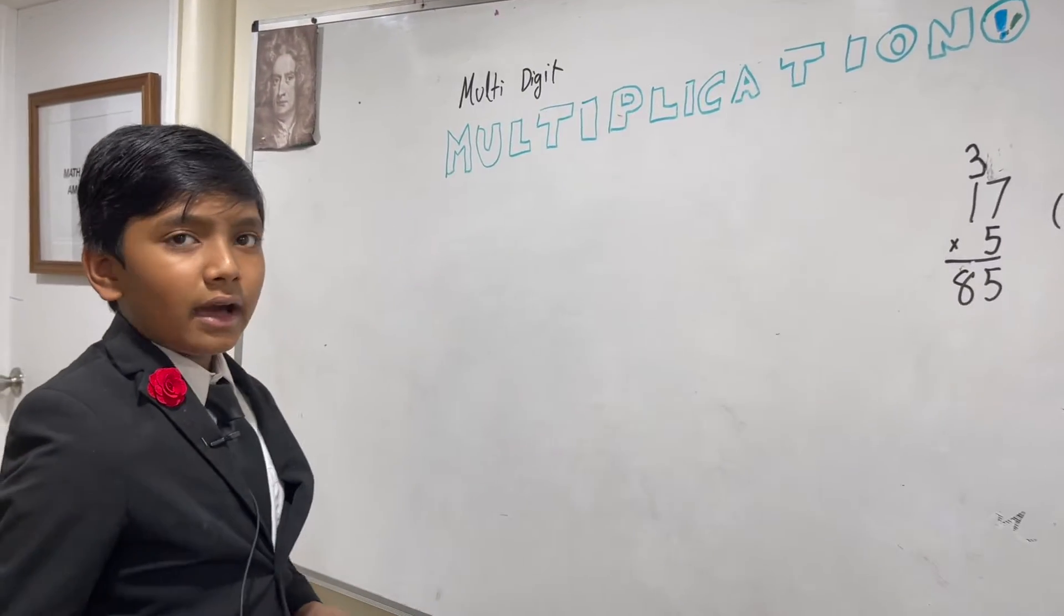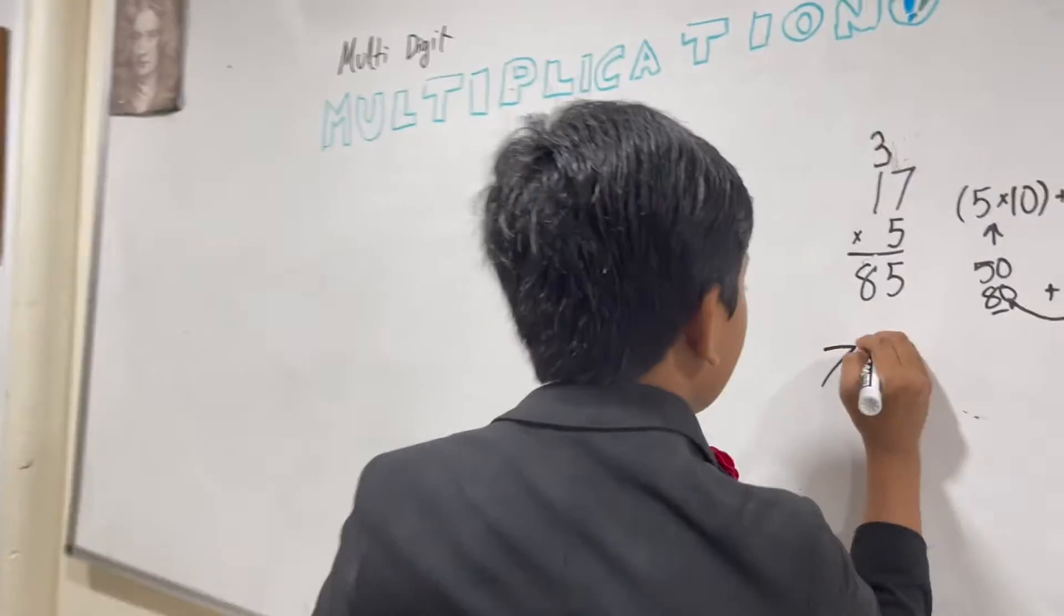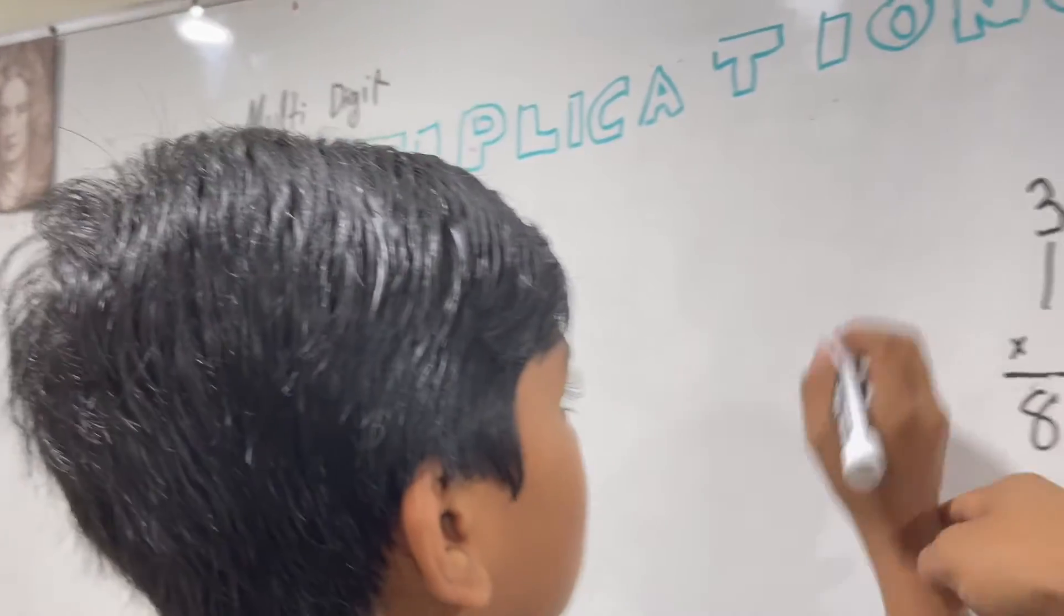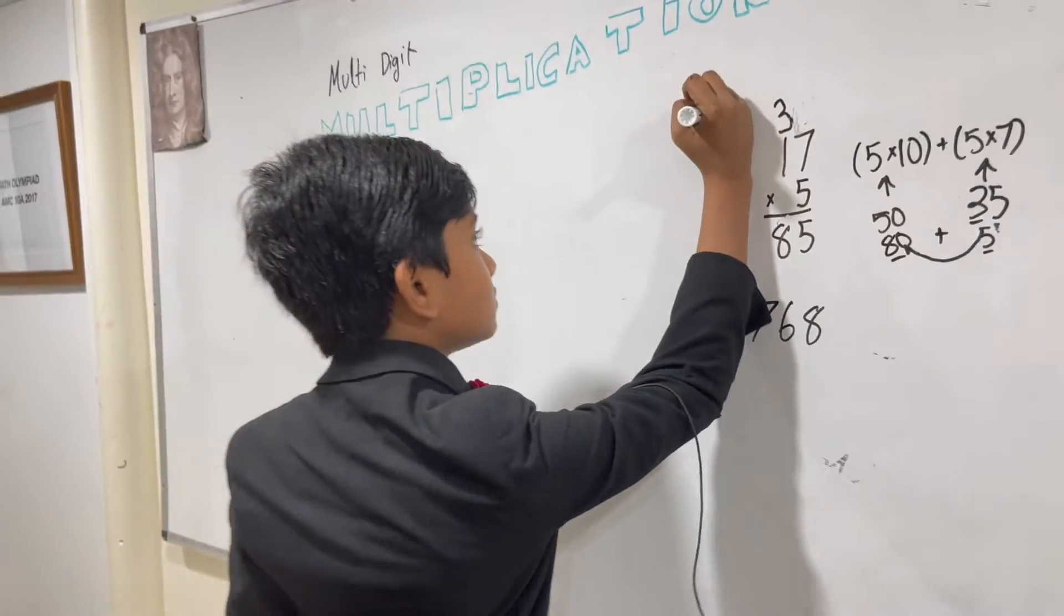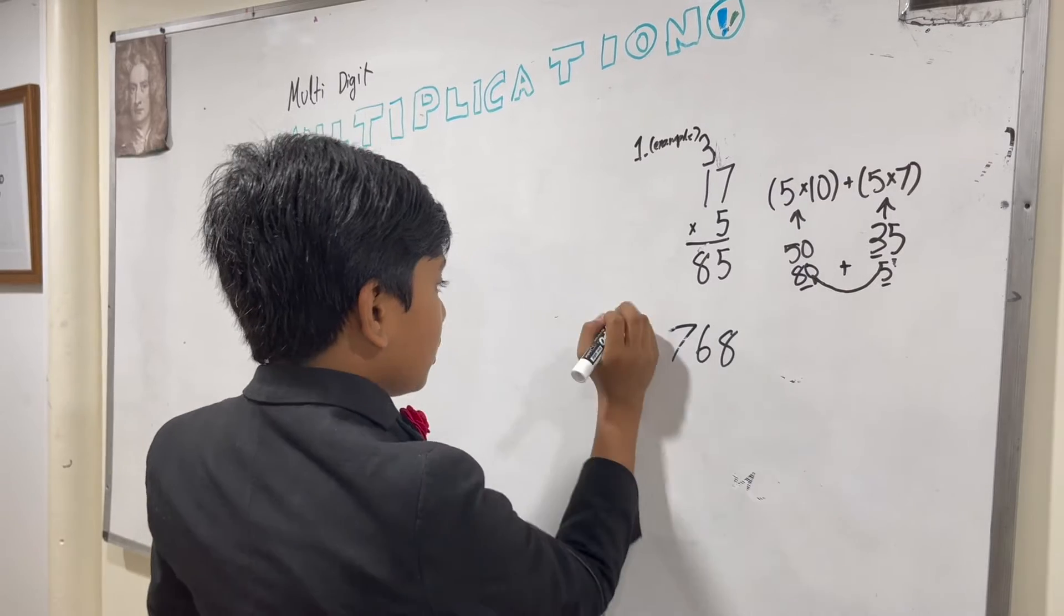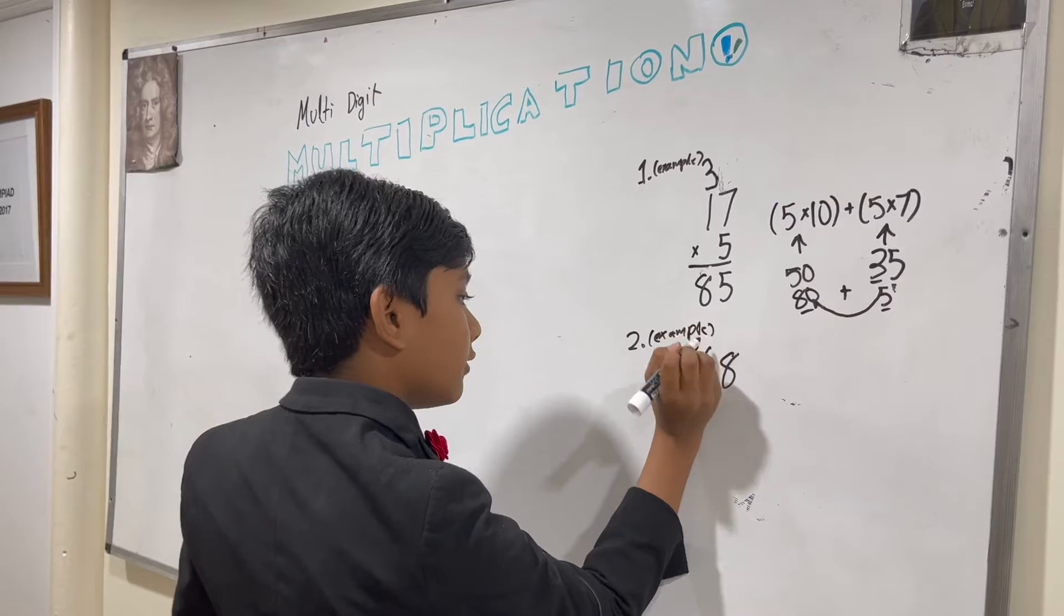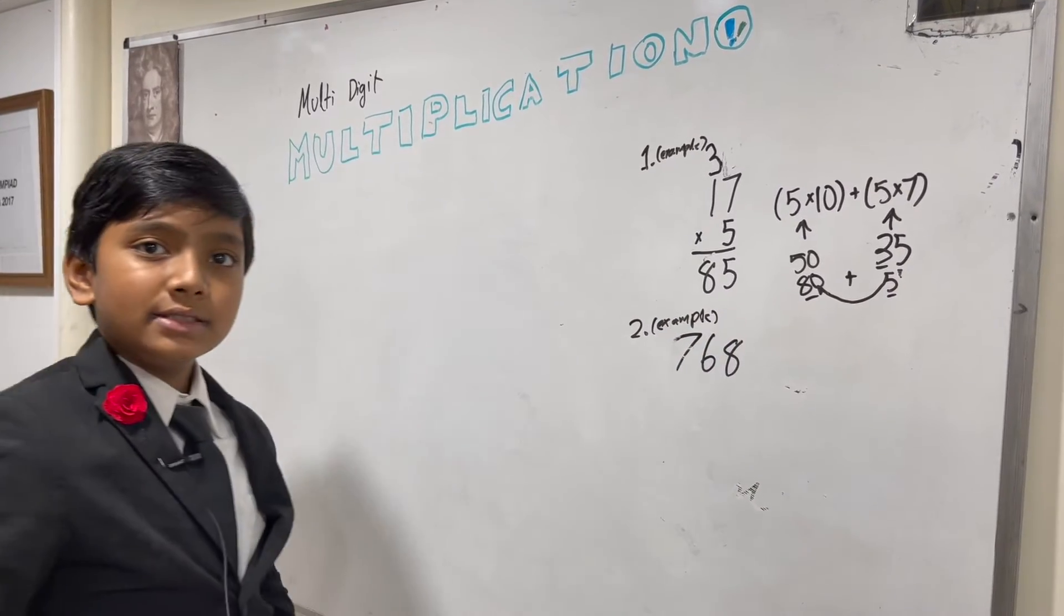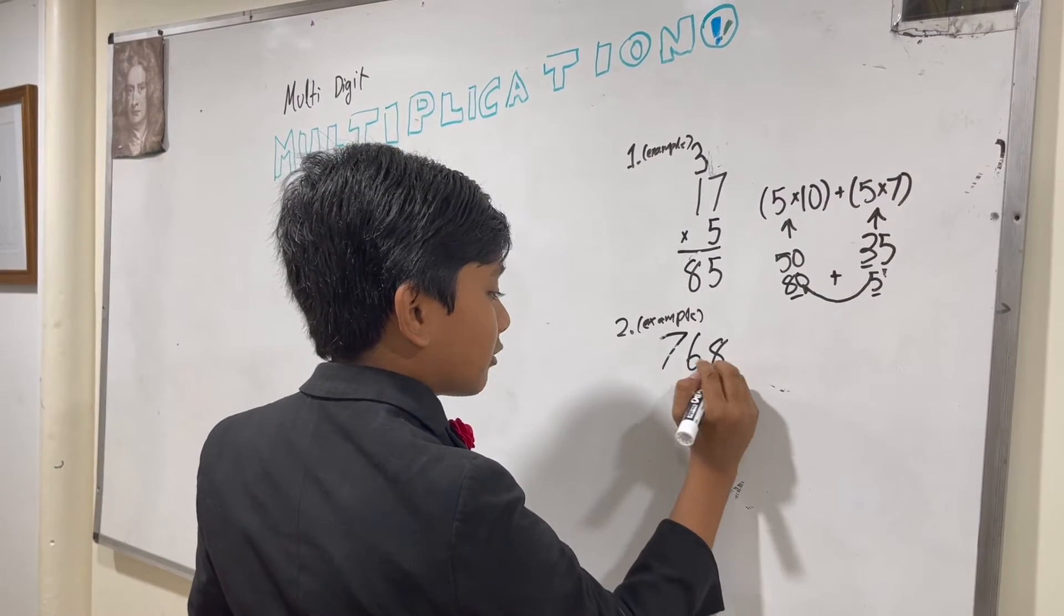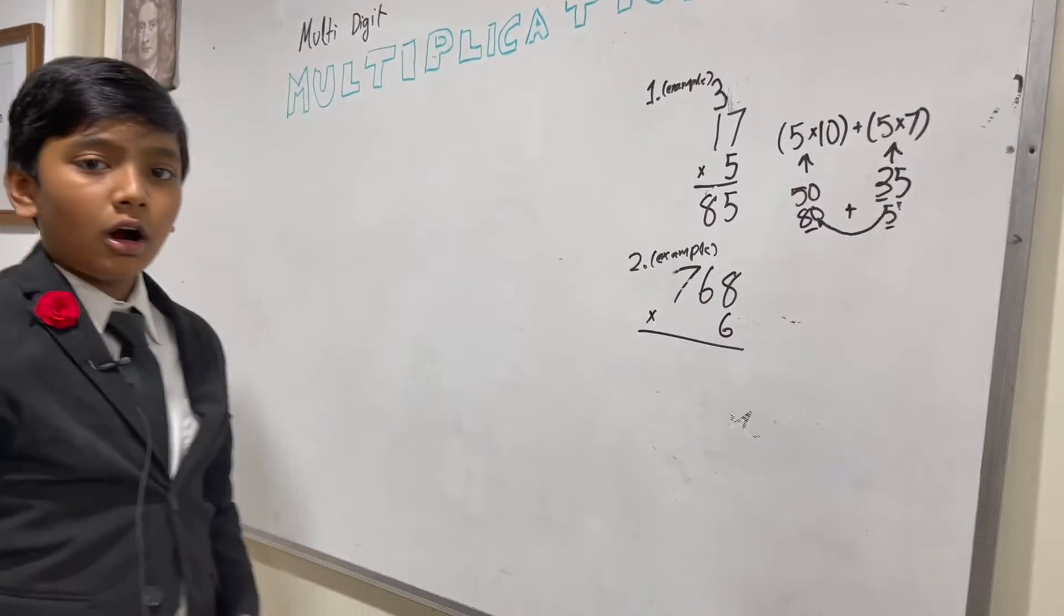Alright. Now, let's try another one. Let's try another example before I set you up. 768 times, no, not 5. That's our original. Why don't we do 6?